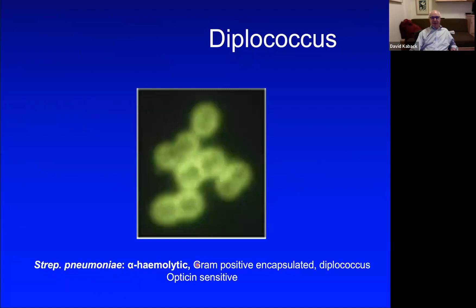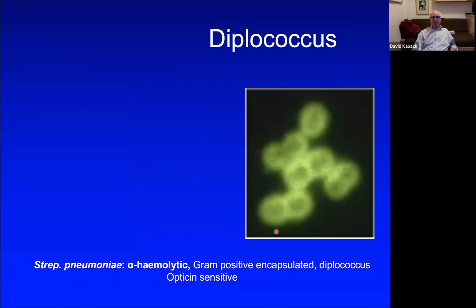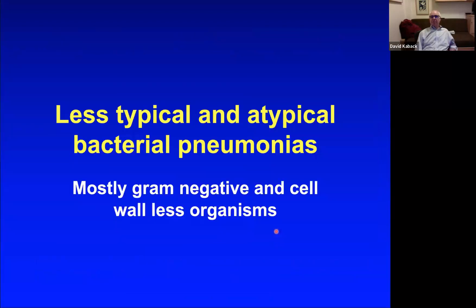To summarize: Strep pneumoniae is alpha-hemolytic, gram-positive, encapsulated diplococcus, optochin-sensitive. Don't confuse diplococci with diplodocus, which is a big dinosaur. What we just covered is the typical pneumonia — the rest of the lecture will cover atypical bacterial pneumonias.